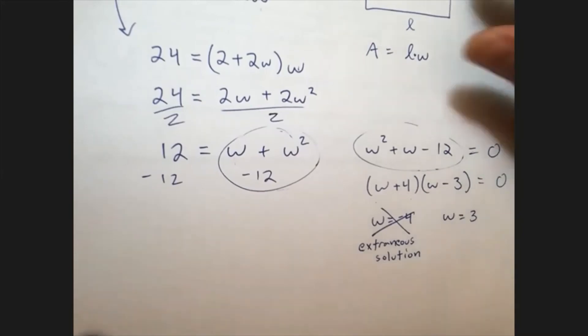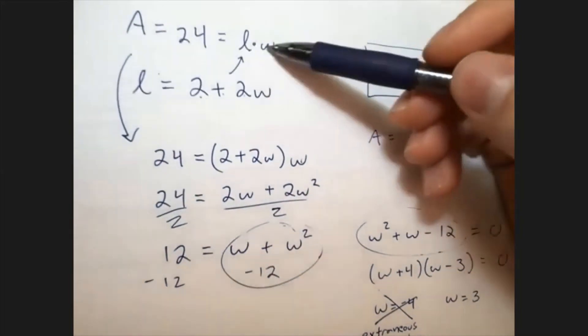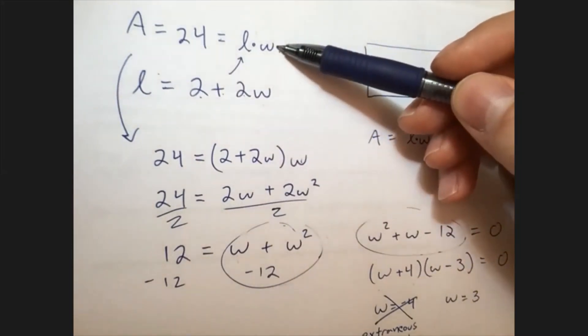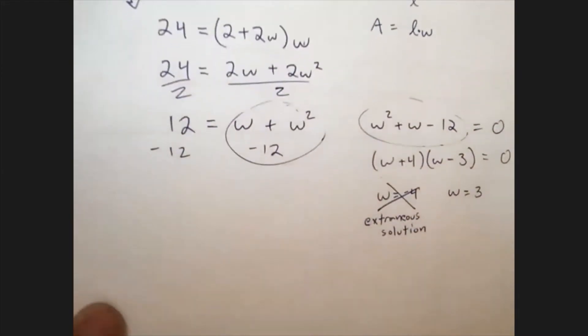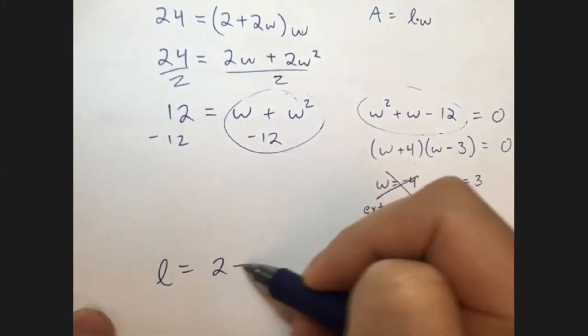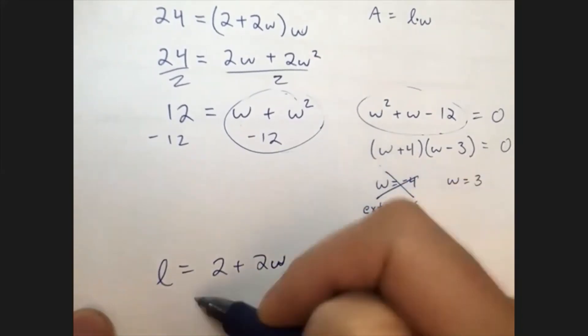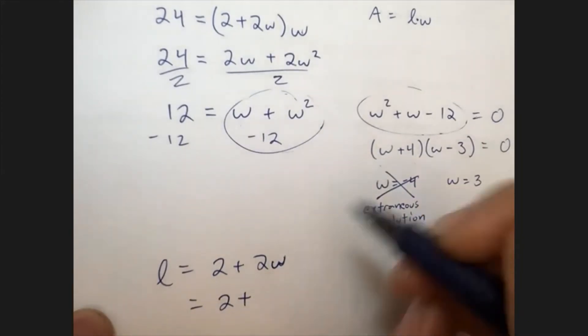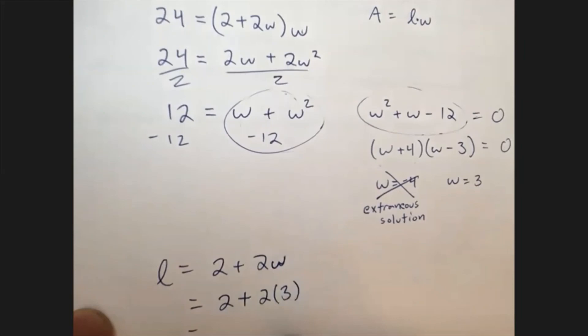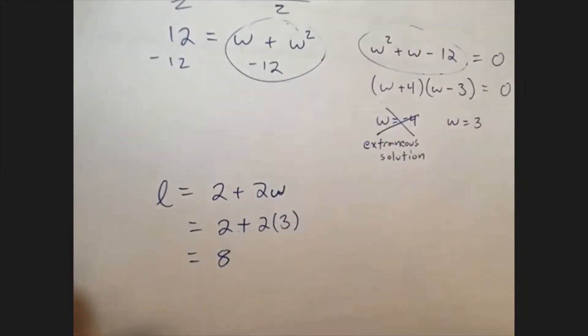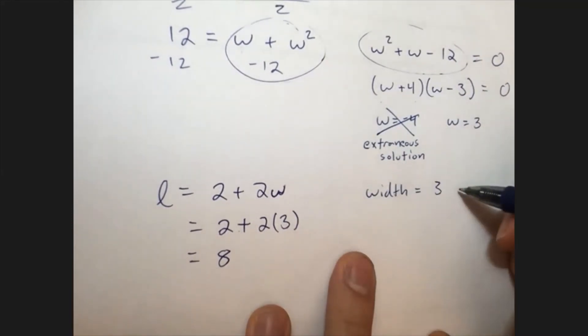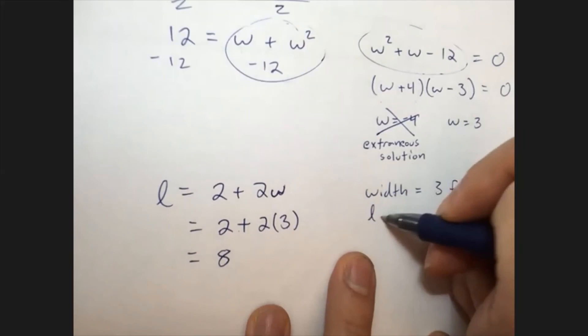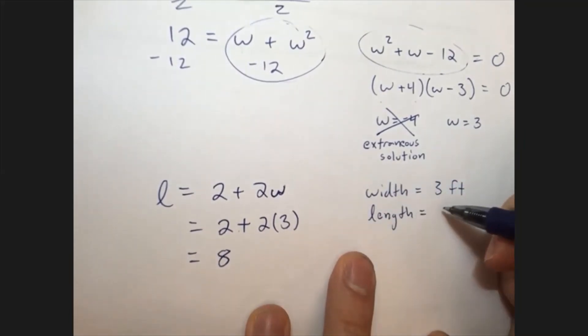We still need to find L. So let's look back up at our equations. And there's actually two equations. We could use this one to find L, or this one is already solved for L, so let's use that one. L equals 2 plus 2W. And W equals 3. So L equals 2 plus 2 times 3. Well, 2 times 3 is 6. Add 2 to it, we get 8. So the width is 3 feet, and the length is 8 feet.